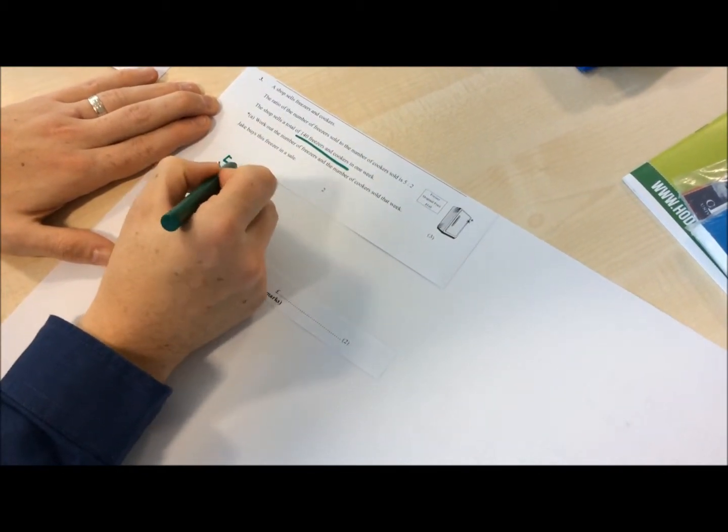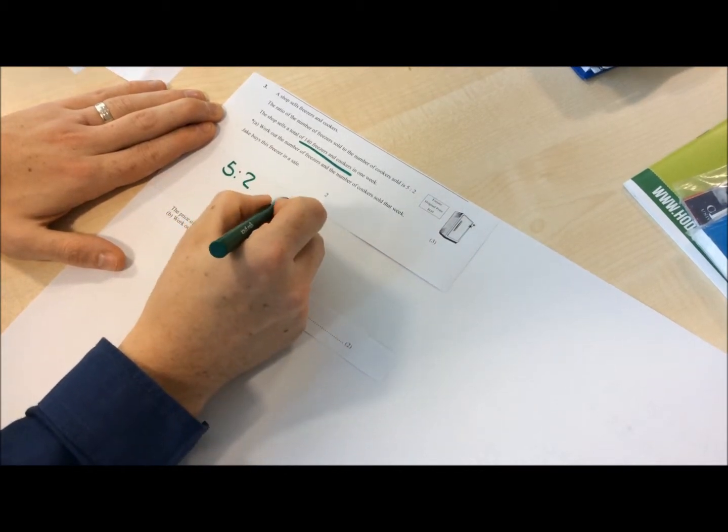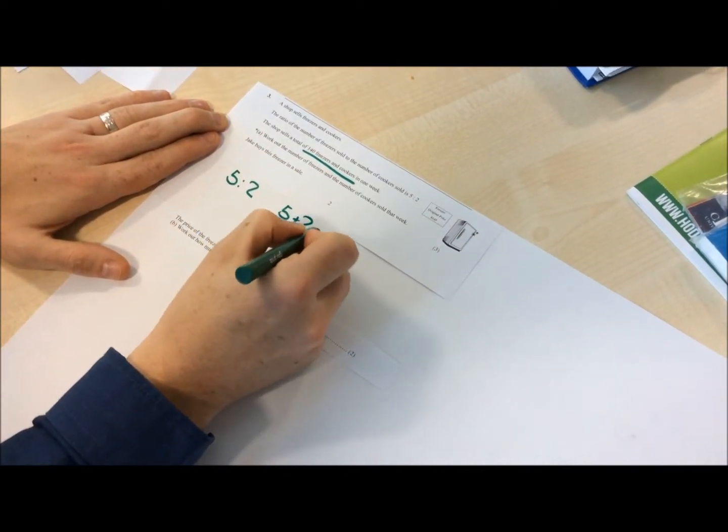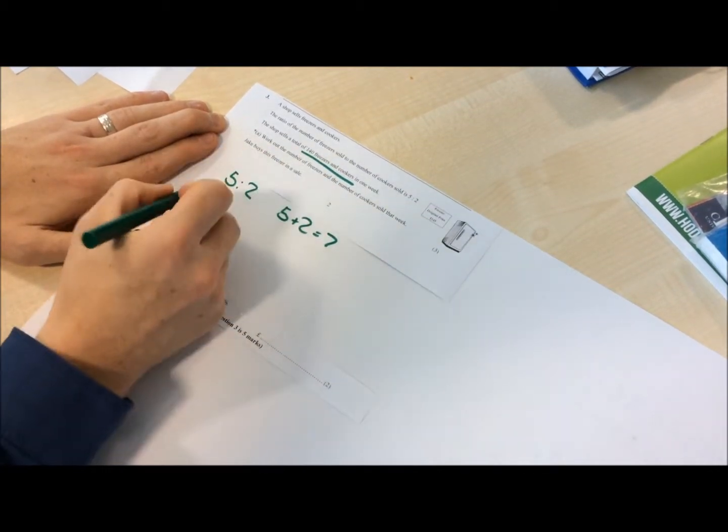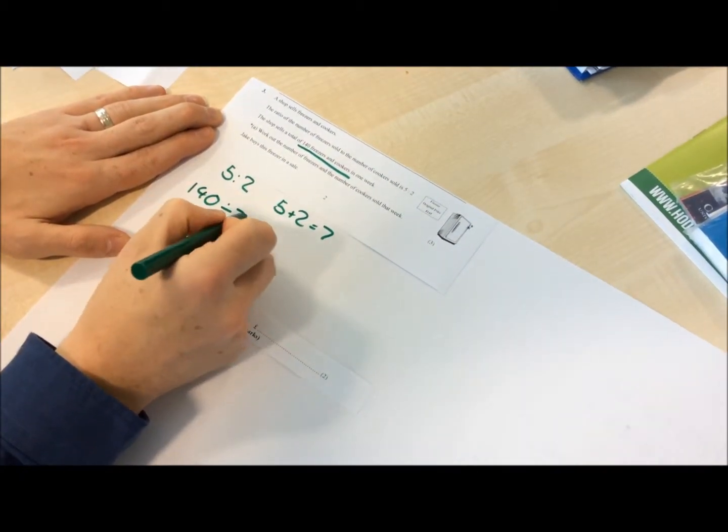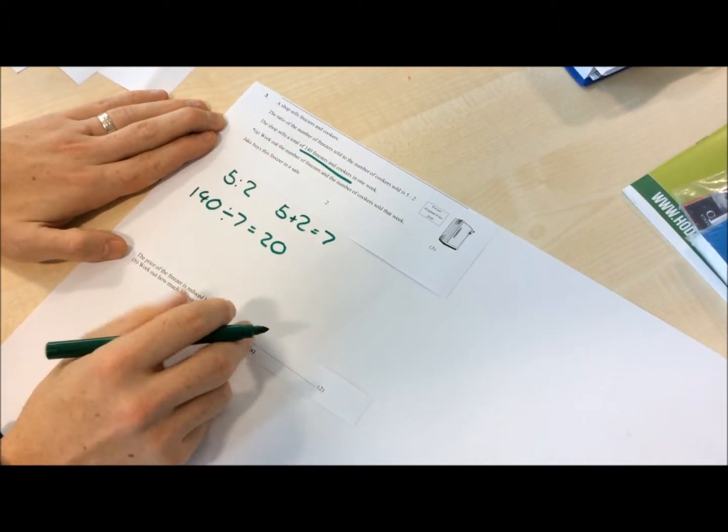The first step with ratio questions, when I've got the total, is to take my 5 to 2, add my ratios together to get a 7. It means I need to split 140 into 7 parts, which means that each part is worth 20.